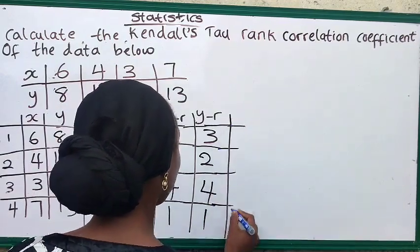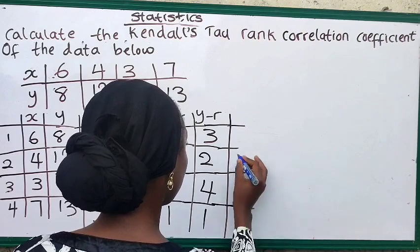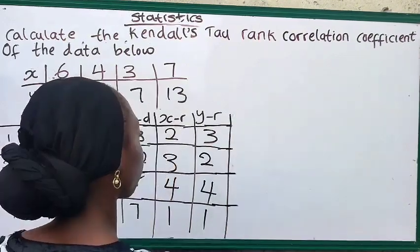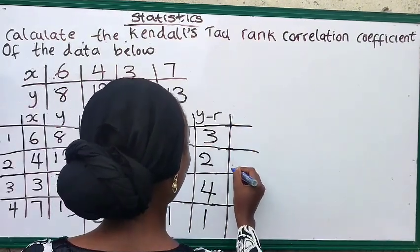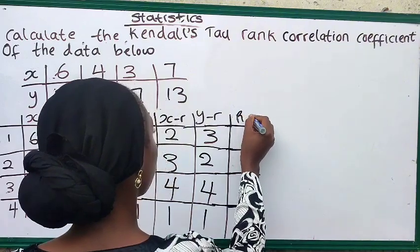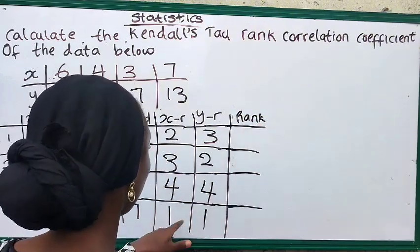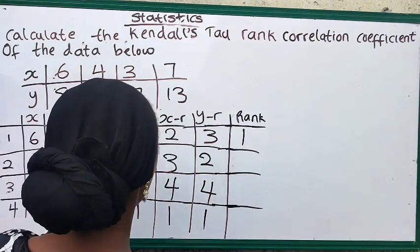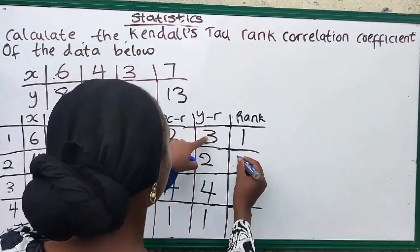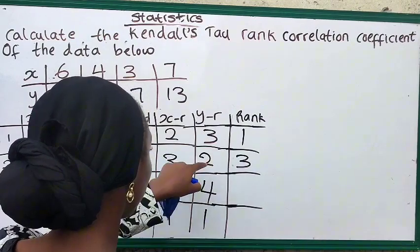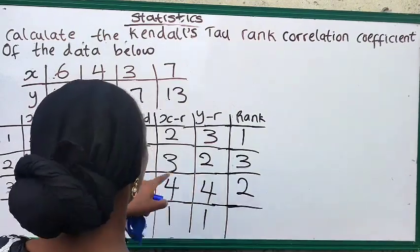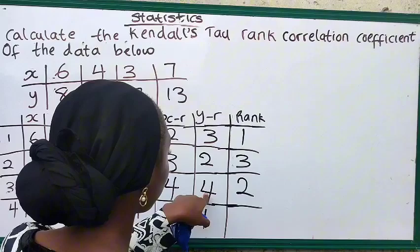So after ranking this, the next step is to do our final ranking. When x is 1, y is 1. When x is 2, y is 3. When x is 3, y is 3. And when x is 4, y is what?